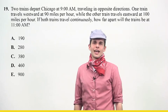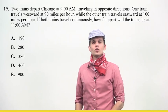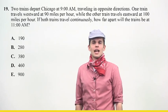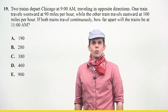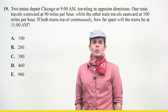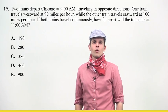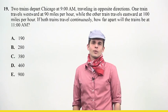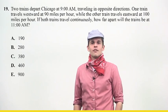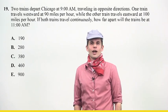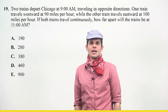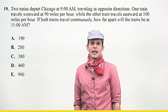Let's read the question again. It says two trains depart Chicago at 9 a.m., traveling in opposite directions. One train travels westward at 90 miles per hour while the other train travels eastward at 100 miles per hour. If both trains travel continuously, how far apart will the trains be at 11 a.m.?